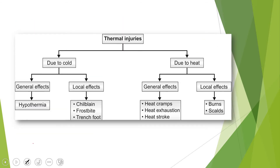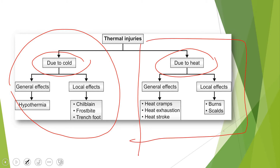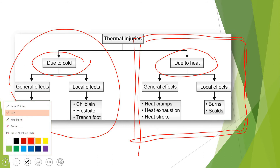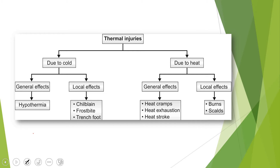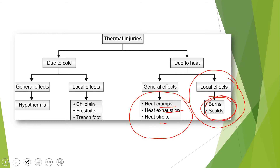Thermal injuries can be broadly classified as due to cold or heat. For this lecture, we focus on heat. When the body is exposed to heat, there can be generalized effects — such as heat cramps, heat exhaustion, and heat stroke, terms commonly heard in the Sindh region of Pakistan. However, these are not the primary concern of forensic pathology; they are major concerns of ICUs and medical wards. Forensic departments are most concerned with local effects — the burns and scars — which we will discuss in detail.